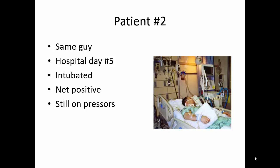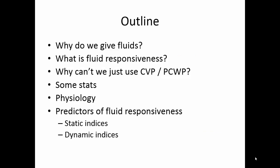In both of these situations, you're faced with the question of whether giving fluids is going to improve the patient's hemodynamics. What is our goal in giving fluids? We'll talk about how to define fluid responsiveness, why we can't just use the CVP, some of the stats in these studies, and the underlying physiology — so you can apply that to your interpretation of whether a test is going to be useful for your patient, and then review static and dynamic indices.